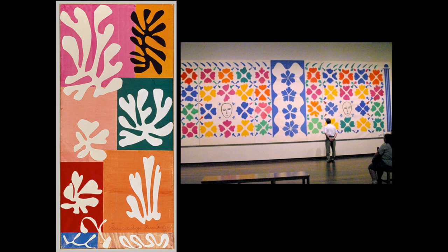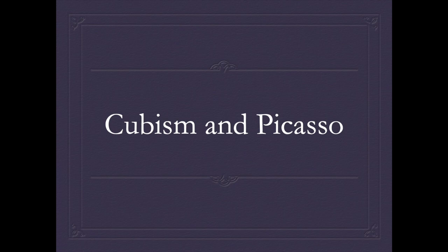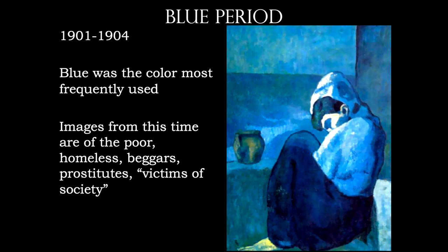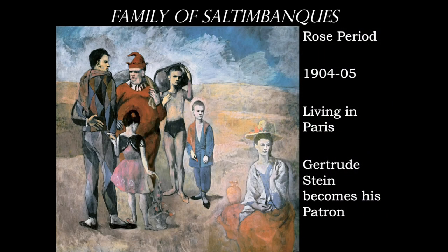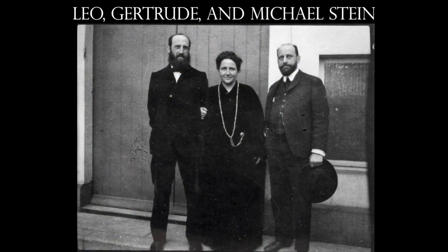With Cubism and Picasso, remember the different periods of his life. During the Blue Period, still living in Spain, he was very poor, often homeless, surrounded by people he viewed as victims of society. The lowest point was the suicide of his friend Casagemas. During the Rose Period, his life improved: he transitioned to France and Gertrude Stein became his patron. The Harlequin figure at the far left in one painting is a self-portrait of Picasso. Leo, Gertrude, and Michael Stein — all siblings — were early patrons of artists such as Cézanne, Matisse, and Picasso.